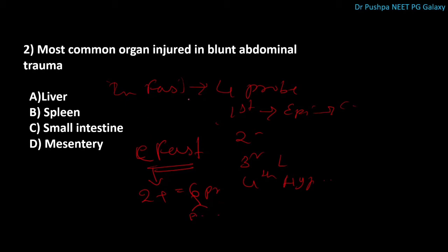We should suspect splenic injury if there is fracture of the 9th to 11th ribs on the left side, or bruising on the left lower chest wall. There are many grades of splenic injury. Grade 1: subcapsular hematoma less than 10% of surface area, or laceration less than 1 cm in depth. Grade 2: subcapsular hematoma 10–50% of surface area, or laceration 1–3 cm. Grade 3: subcapsular hematoma more than 50% of surface area, or laceration more than 5 cm. Grade 4: injury to splenic vessel. Grade 5: shattered spleen.